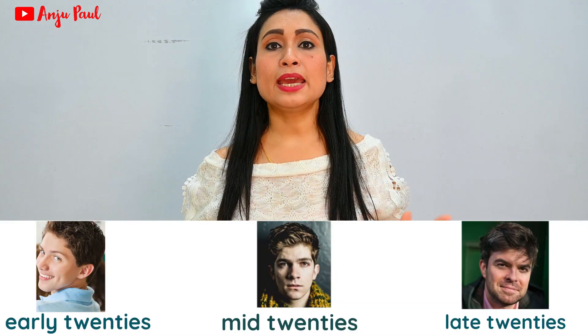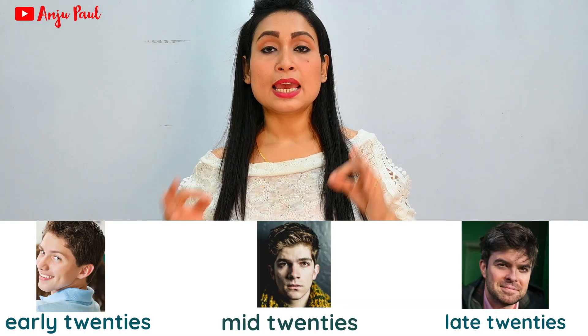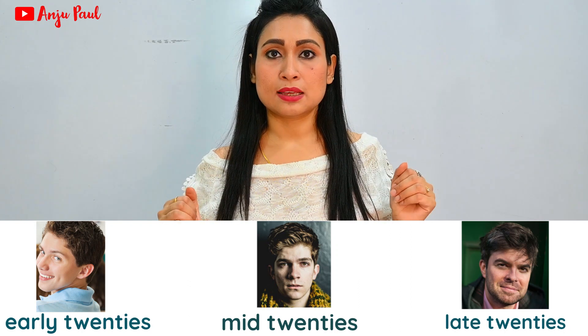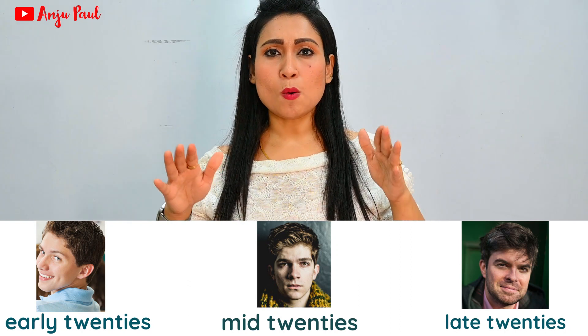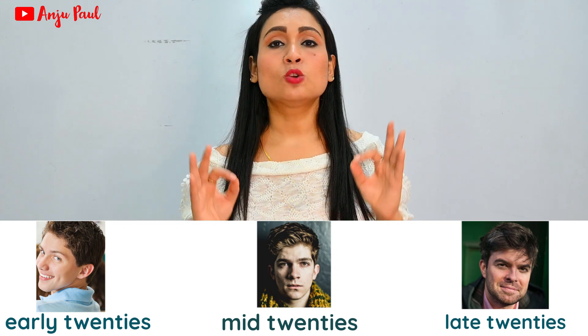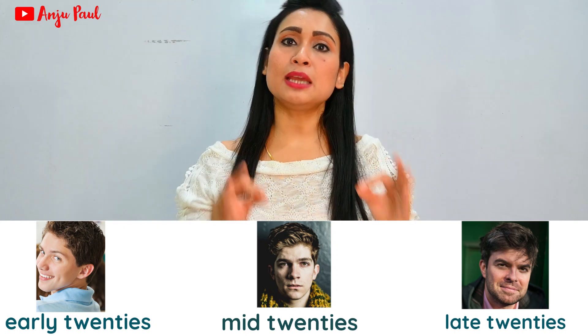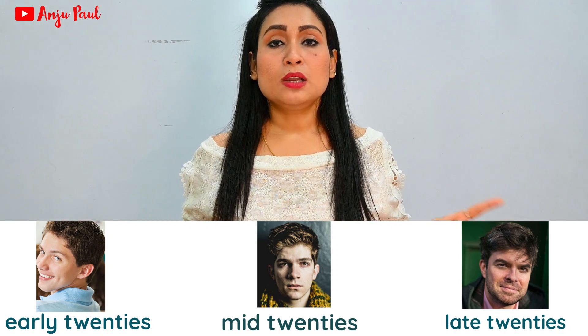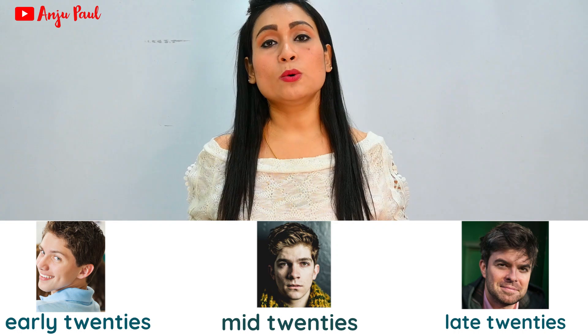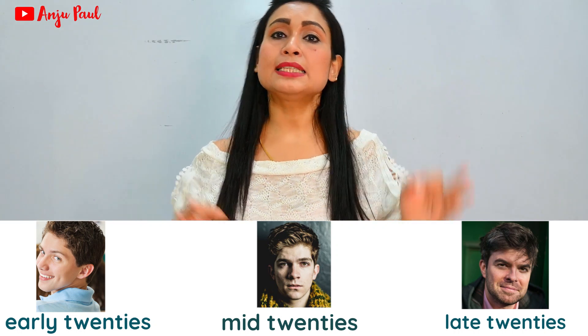Next, let's talk about age. Suppose someone asks how old a person is and we are not sure of the exact age. If we know he is around 20–22 years old, we say 'He is in his early 20s.' If we know he is around 24–26 years old, we say 'He is in his mid 20s.' And if we know he is around 27–29 years old, we say 'He is in his late 20s.'